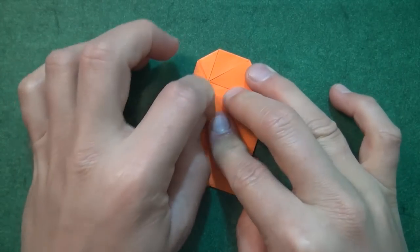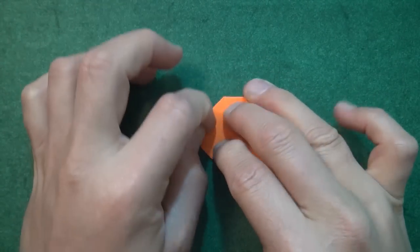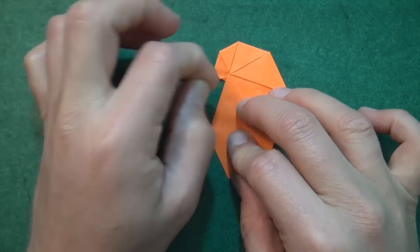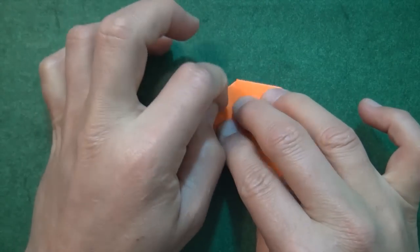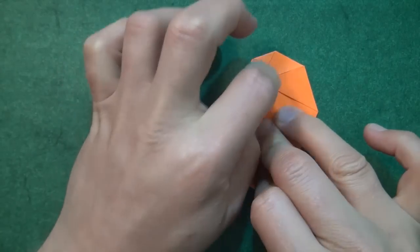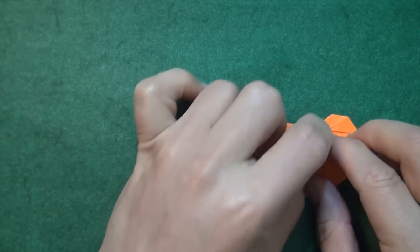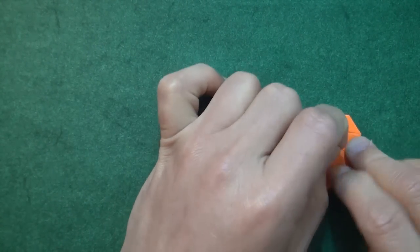Except that we want to make it really flat in order to fly the best. So just crease with your fingernail around the perimeter of the model. And maybe in the middle too. Just really try to flatten it.